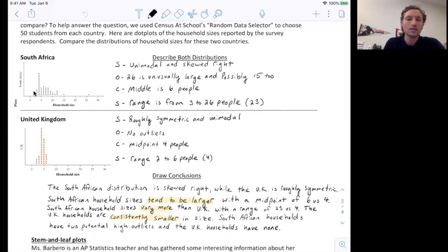The spread of South Africa was 23 versus the spread in the United Kingdom was only four. So you can see that this distribution is much more spread out, which means you need to draw this conclusion that the UK households are consistently smaller. They're more consistent because the range is only four. You're more likely to get a value between two and six in UK than you are in South Africa. So you need to make sure you're using these types of words. South African household sizes vary more. There's more variation in that distribution. And then finally, make a note that there are no outliers in the United Kingdom, but there are possibly two high outliers, definitely one high outlier in South Africa.